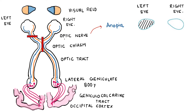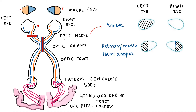Next, transecting at the level of the optic chiasma. Here both the nasal fibers are cut. The nasal fibers pick up the temporal field of both eyes, so both temporal parts of vision are lost. When the opposite sides of the visual field are lost this is known as heteronymous hemianopia. So when the optic chiasm is transected we have heteronymous hemianopia.